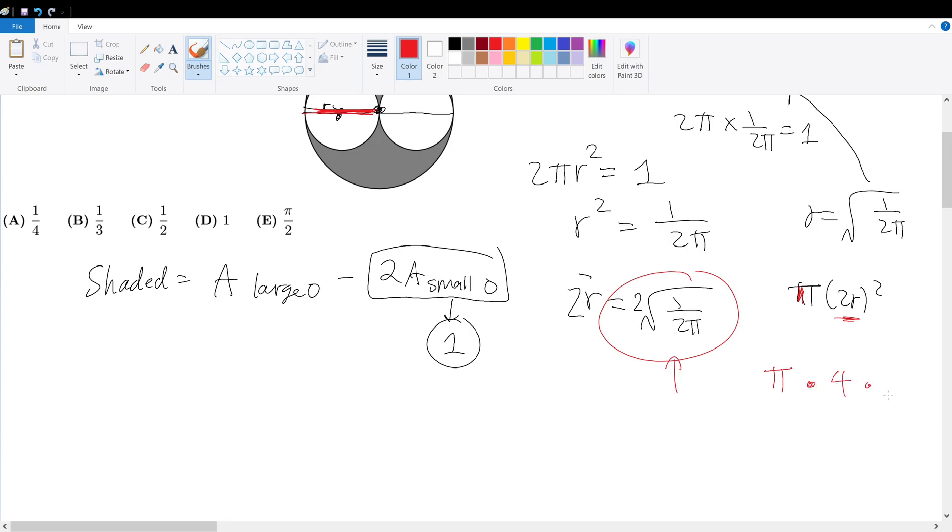That's π times 4 times 1 over 2π. The π and π cancel, and 2 and 4 cancel into 2. So that means the area of the large circle is equal to two.